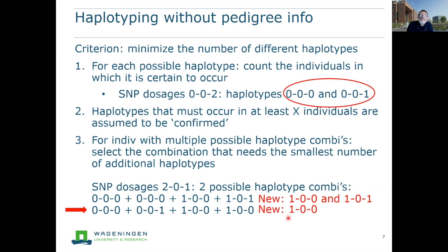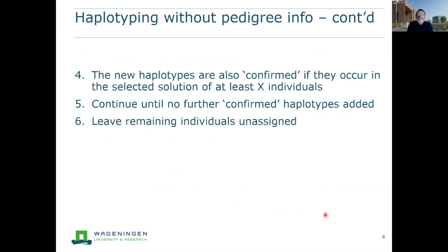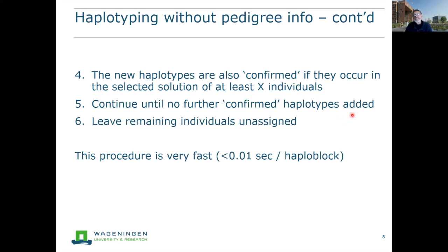We continue this same process until no further confirmed haplotypes are added, and then there will still be a number of individuals unassigned because they still have multiple possibilities. This is a kind of iterative information exchange without using any pedigree information. Although it sounds complex, it is a very fast procedure — around 100 haploblocks per second.